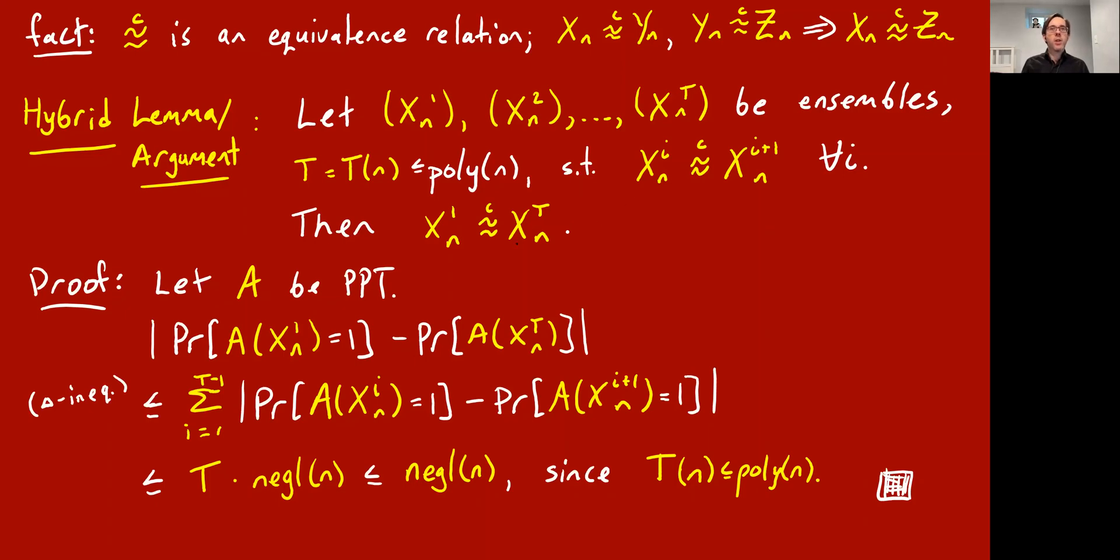So here's the proof written out. We want to show under this assumption that the adjacent ones are indistinguishable, that the endpoint ones are indistinguishable. So what we need to show is if A is any PPT algorithm, then A cannot achieve more than a negligible advantage in distinguishing the X1 ensemble from the XT ensemble. So this is what we're looking at here. A's advantage at distinguishing the X1 ensemble and the XT ensemble. And these are numbers. There's a difference of two numbers. And we can use the ordinary triangle inequality and telescoping to say that two numbers differ by at most the sum of the differences between these T intermediary numbers. So this is triangle inequality plus telescoping.